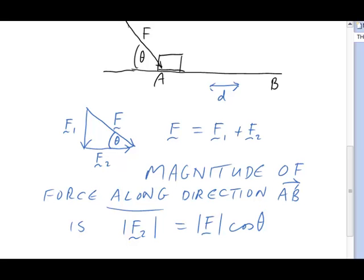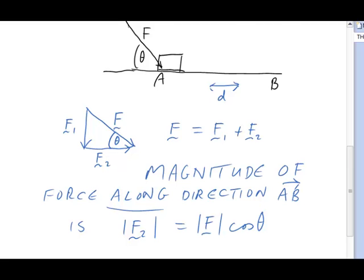It's that F2 part that does the work on the object moving it from A to B. So when we calculate the work, we now have to multiply the distance moved, d, not by the magnitude of F, but by the magnitude of F2. But then we can replace the magnitude of F2 with magnitude of F times cos theta.